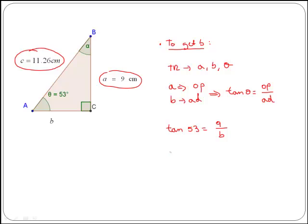To get b, we just multiply across by b in both sides of the equation. So we have b tan of 53 is equal to 9, and then divided by tan of 53 in both sides.